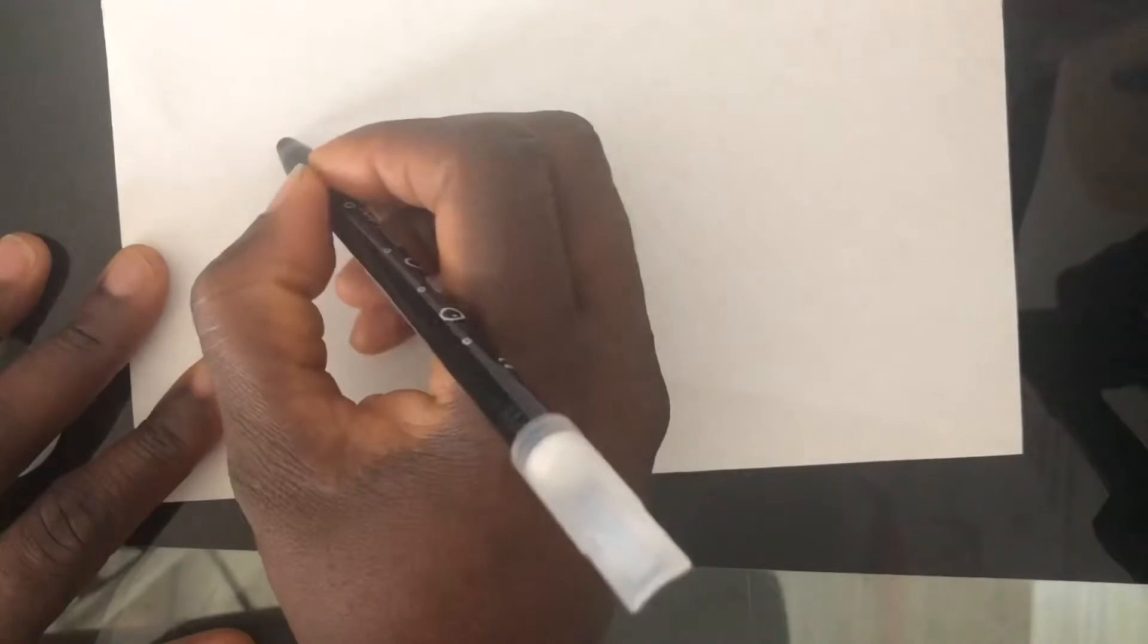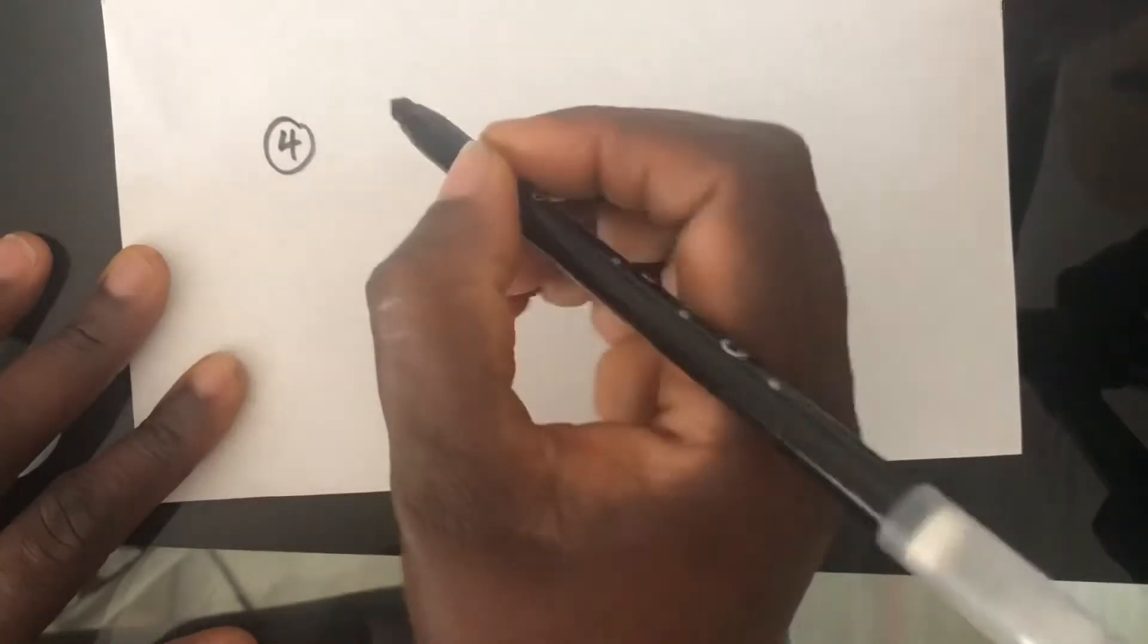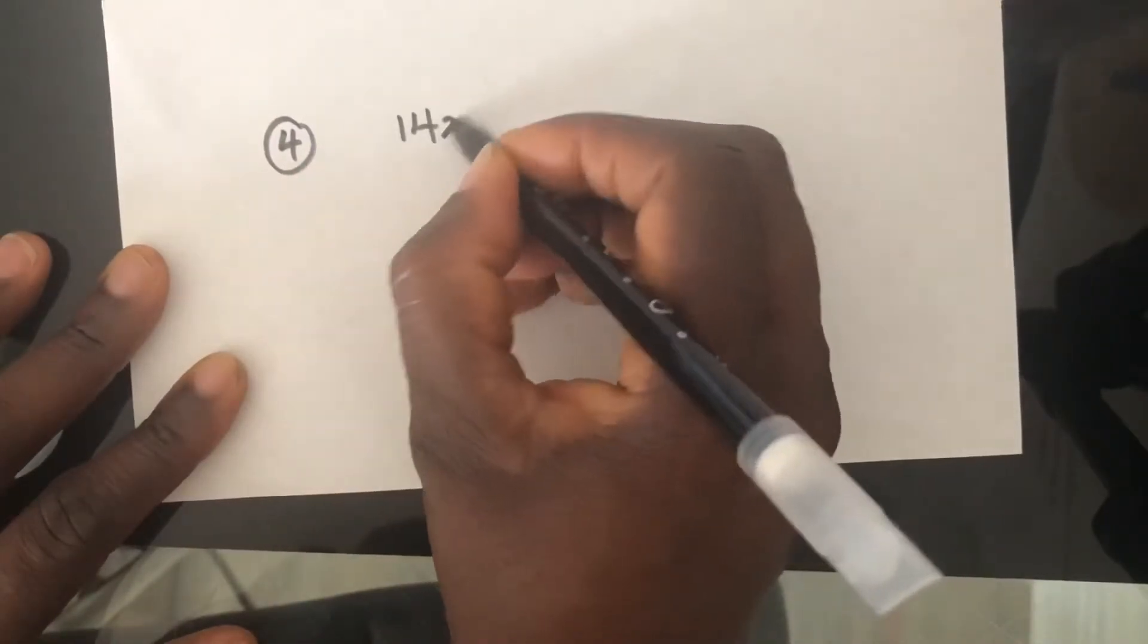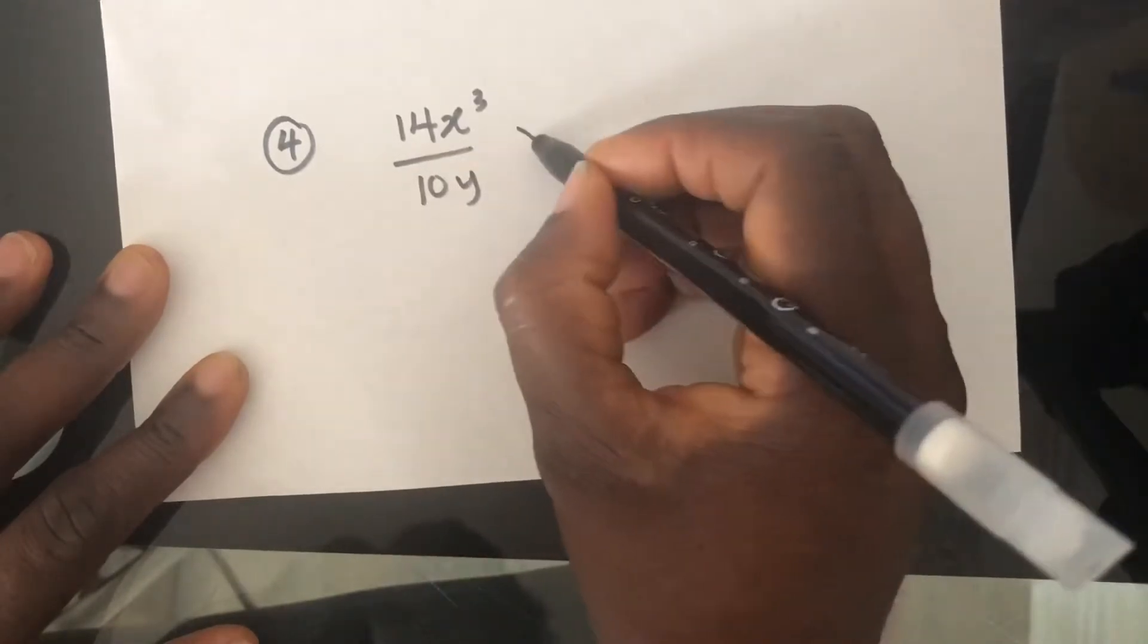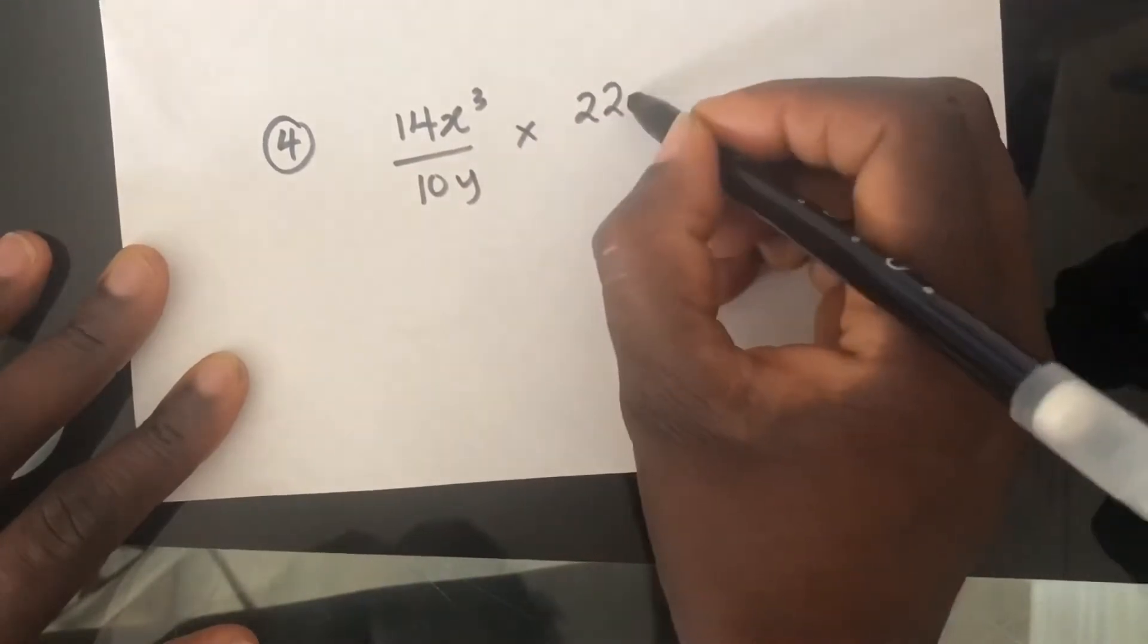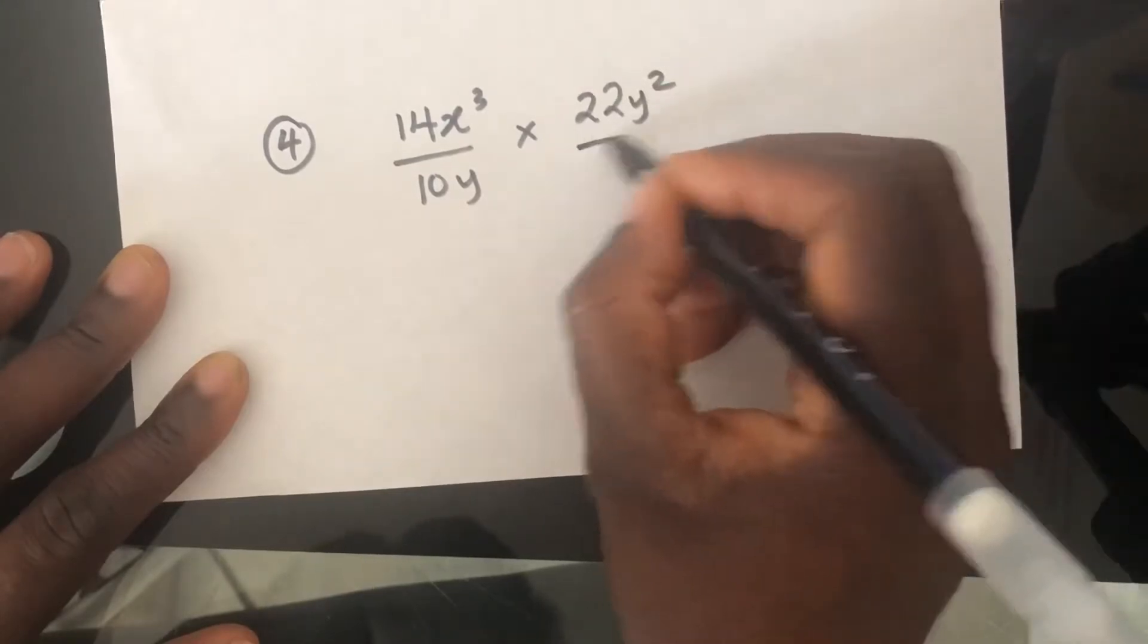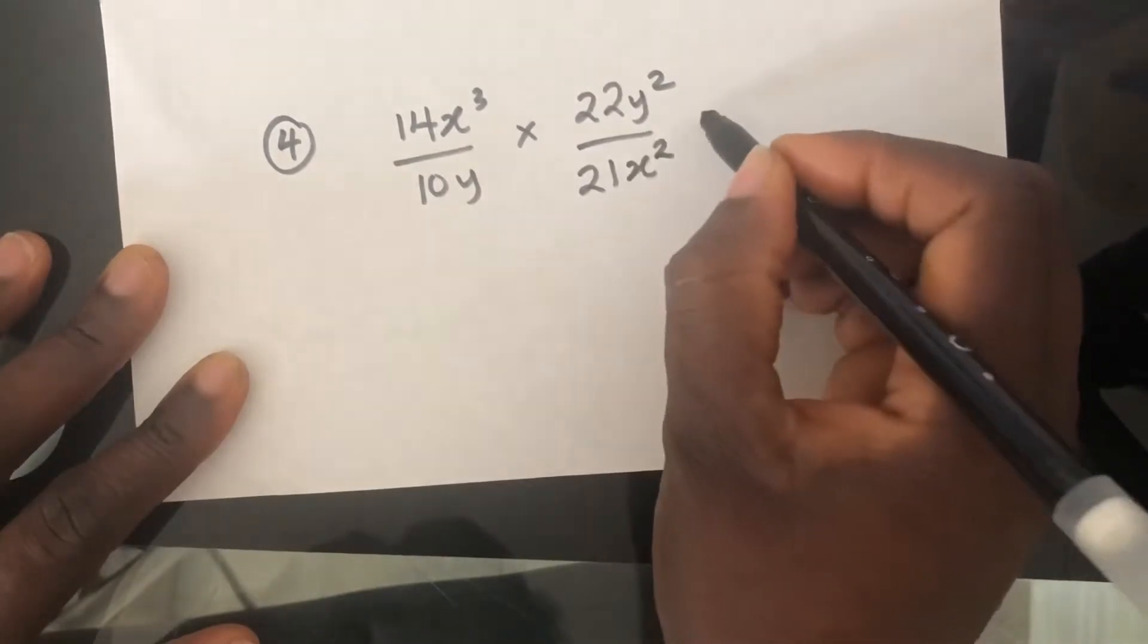Okay, let's do one more. Let's do one more example. 14X cubed over 10Y times 22Y squared over 21X squared.